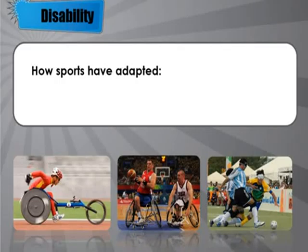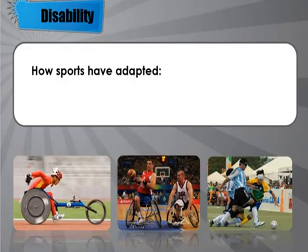Track event athletes get the letter T and field event athletes get the letter F. To ensure people compete against those with similar disabilities, they are also given a number. For example, a track athlete with a visual impairment would be classified T11, T12, or T13, and they would race against other T11, T12, or T13 athletes who also have visual impairments.